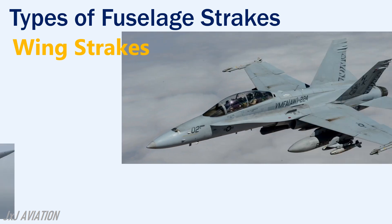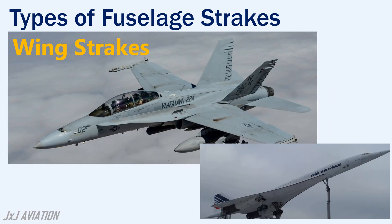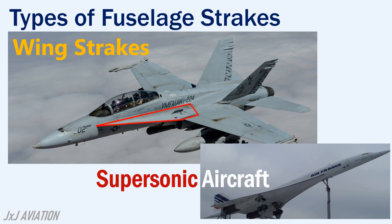The wing strakes. At the leading edge of the wings near the wing root, leading edge wing strakes may be installed. These can be seen on delta wing supersonic aircraft or high-speed subsonic aircraft. These strakes also create vortices that improve the flow characteristics across the wing.